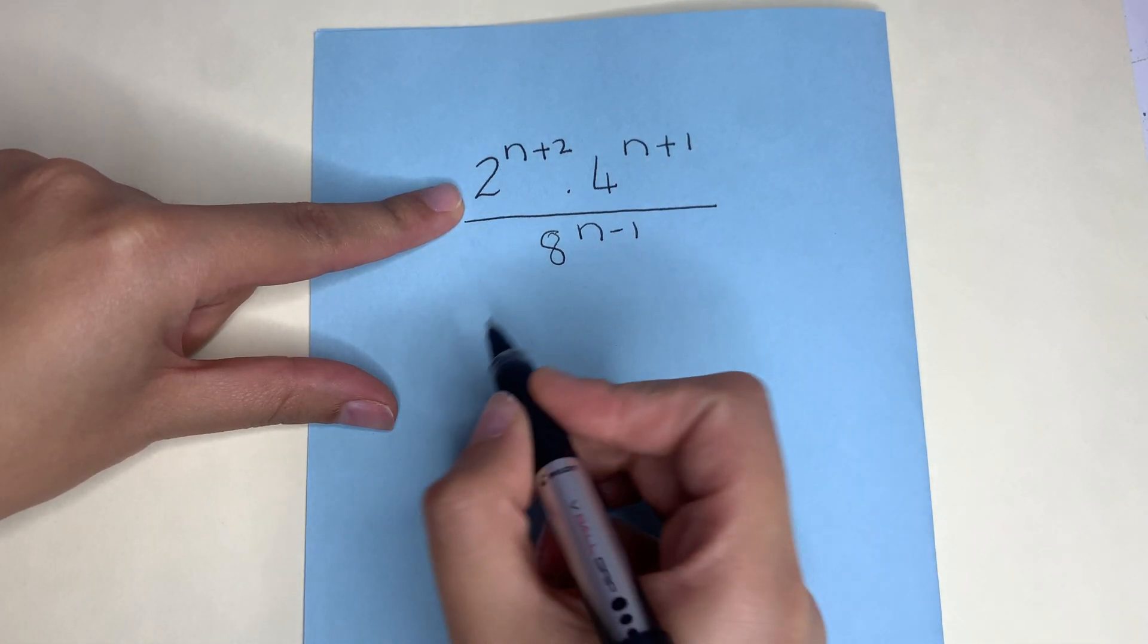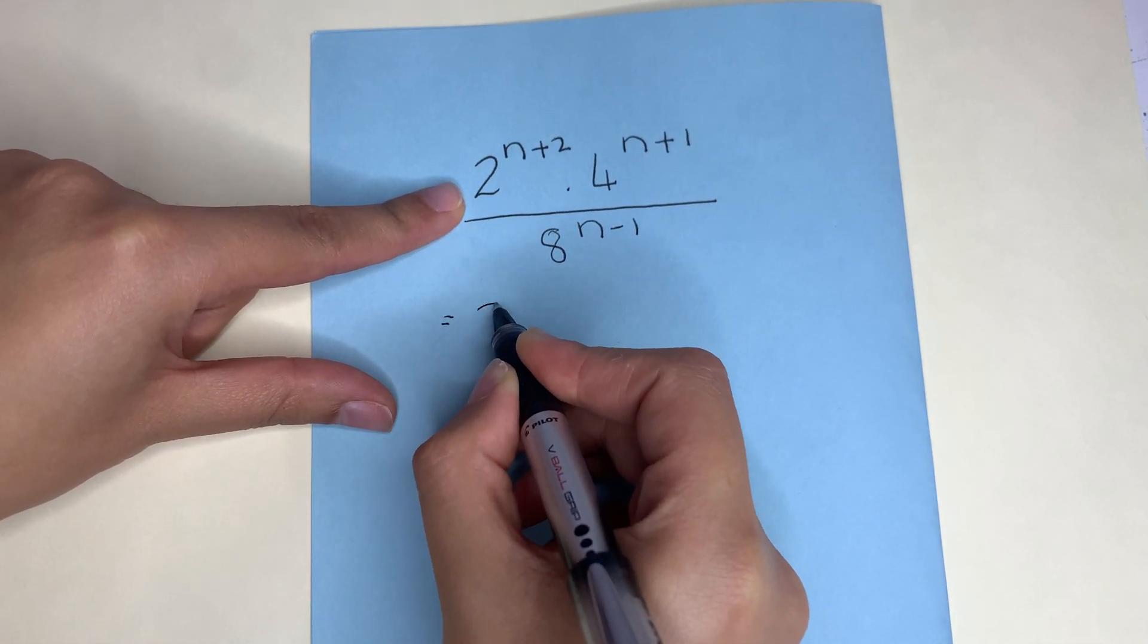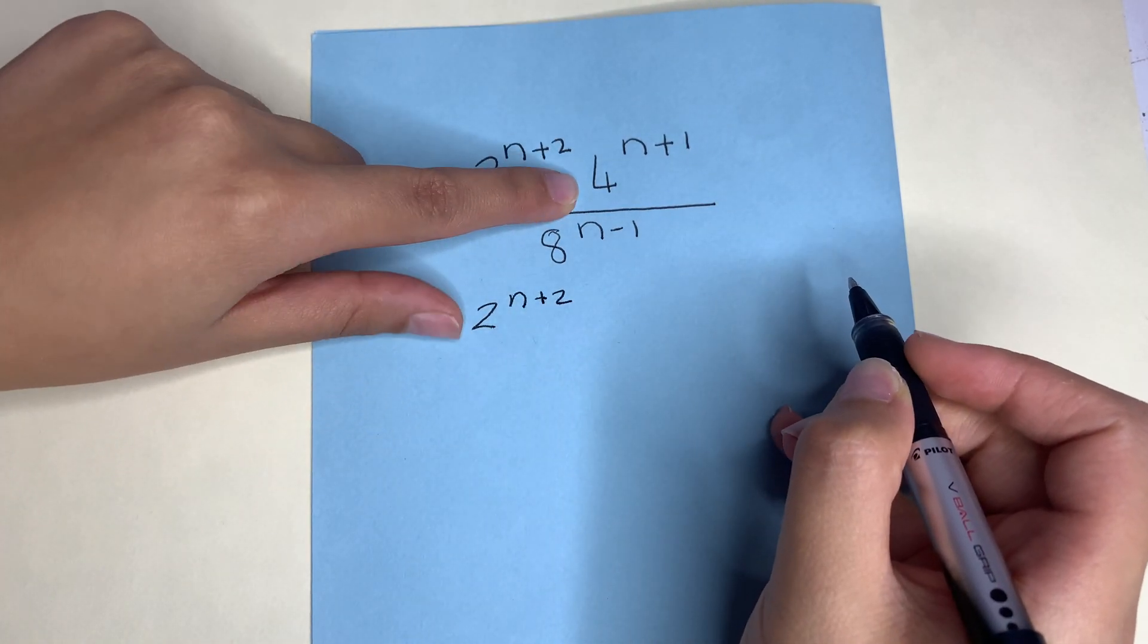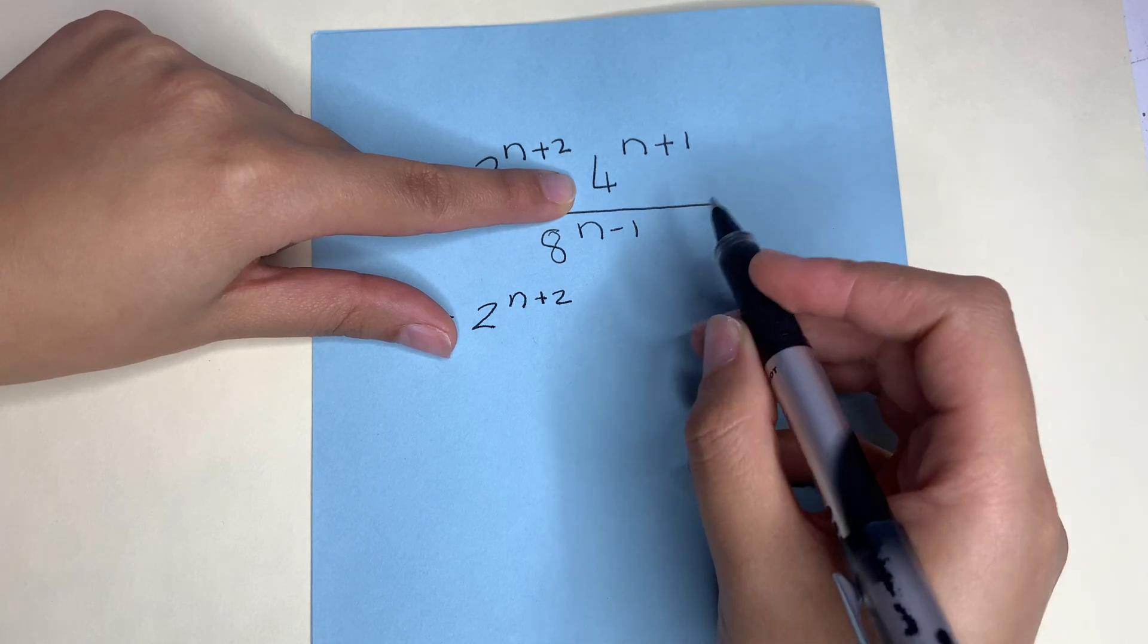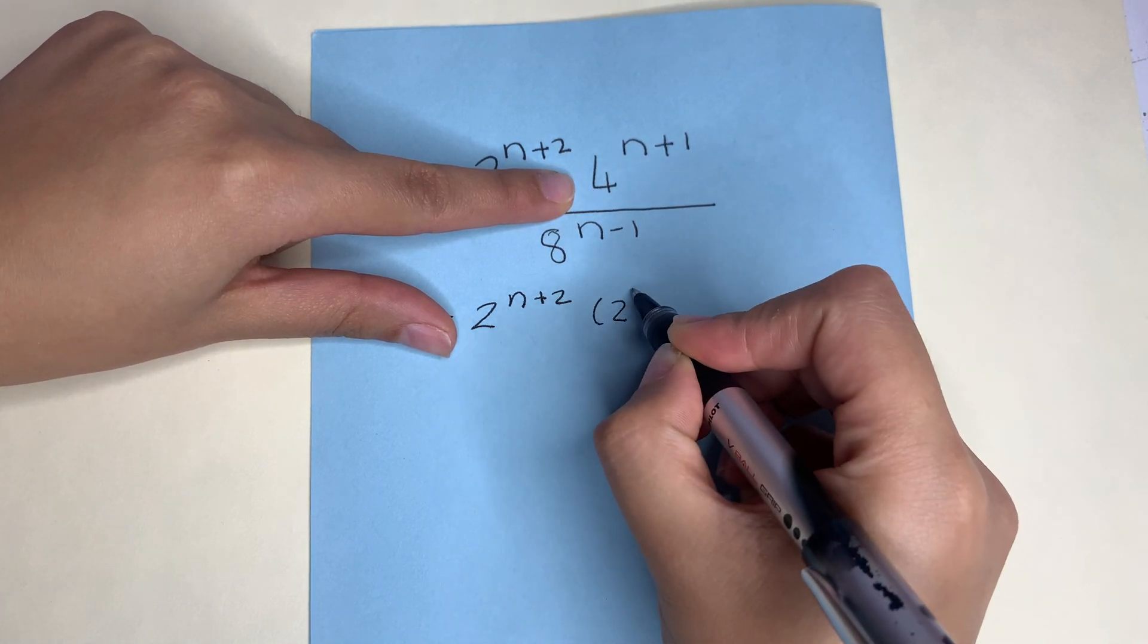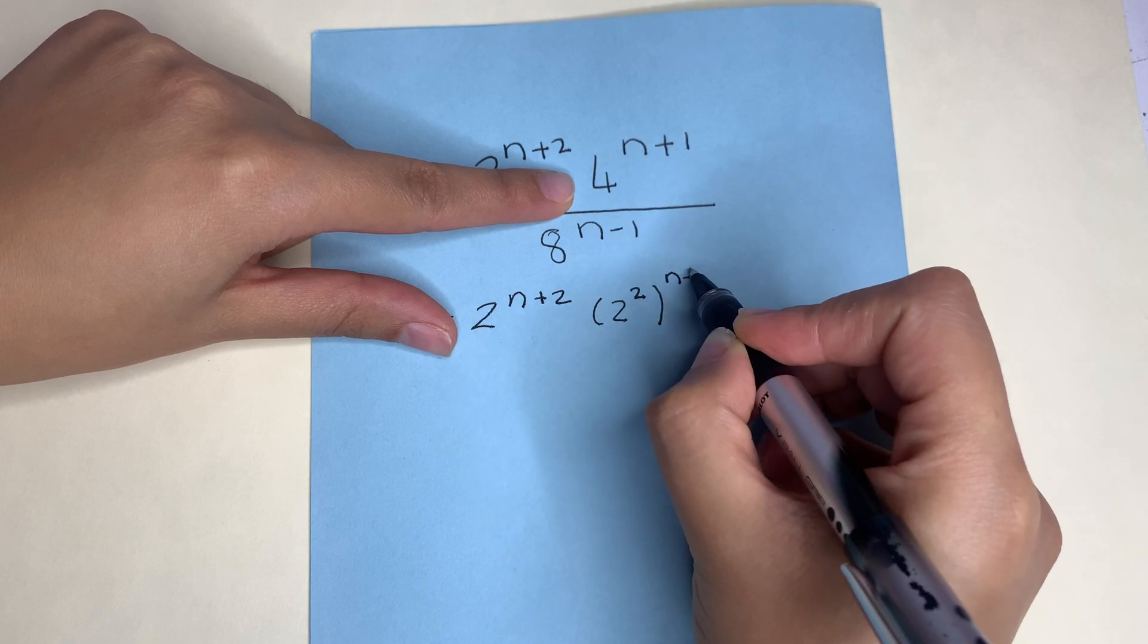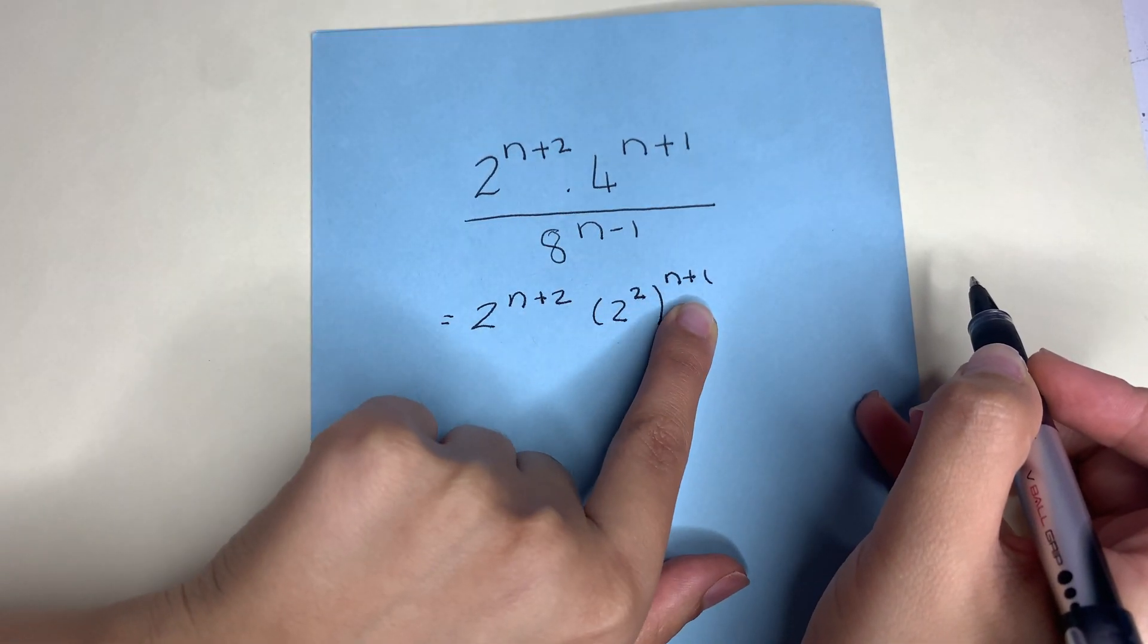We can see 2 is already a prime base. So we can leave it as 2 to the power of n plus 2. 4, I can change to a prime base and that will be 2 to the power of 2 and I'm going to keep in brackets because later I'm going to distribute it to the exponents on the outside.